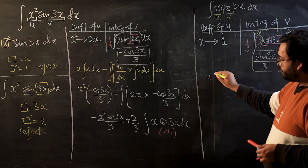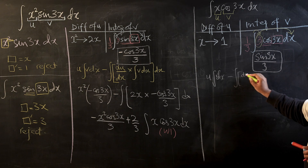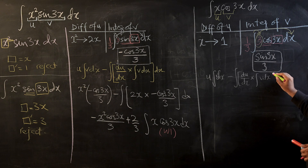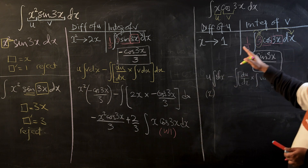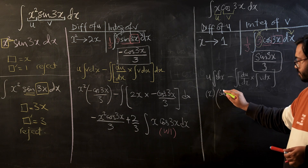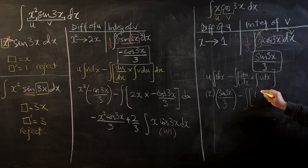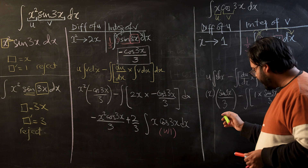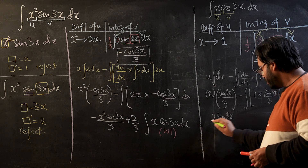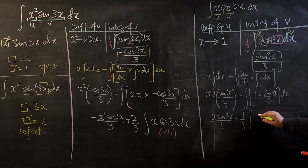Applying the by-parts formula again: u times integral of v minus the integral of [differentiation of u times integral of v]. Placing values: x times sine(3x)/3, minus the integral of 1 times sine(3x)/3. Taking the constant 1/3 outside the integral, we are left with the integral of sine(3x). Writing this out: x·sine(3x)/3 minus (1/3) times the integral of sine(3x).